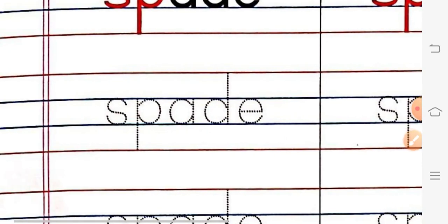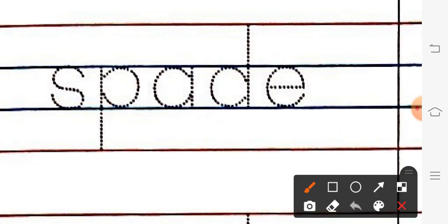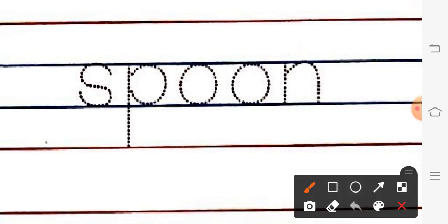What is the first one? The first one is Spade. S, P, A, D, E. Spade. The next one is Spoon. S, P, O, O, N. Spoon. Then, is Sport.